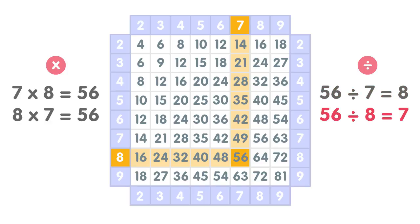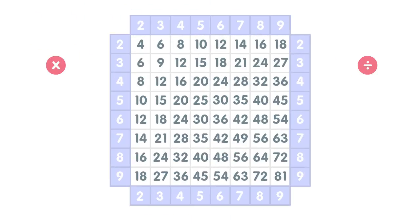All four ways involve the same numbers: 56, seven, and eight. Now let's take a look at some other multiplications. Three times four equals twelve.